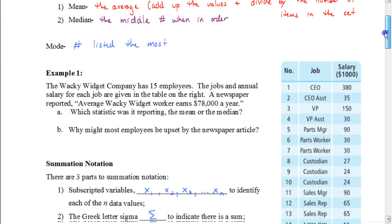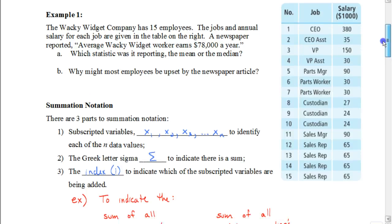Okay, so in this particular story problem, we're looking at the Wacky Widget Company, who has 15 employees. The jobs and annual salary for each job are given in the table on the right. A newspaper reported that the average Wacky Widget worker earns $78,000 a year. Well we need to figure out which statistic was the article reporting. Was it recording the mean, or was it reporting the median?